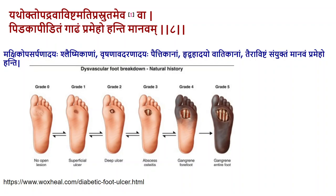In the case of Prameha, or diabetic conditions, complications such as maggot formation and fly attraction over a Kaphaja ulcer — indicating diabetic gangrene — as well as cardiac complications in Vatavyadhi and severe discharge from the wound, are signs indicating a shift to palliative care. In the present day, diabetic ulcers are classified as Grade 1 to Grade 5. Grades 4 and 5 involve gangrene, requiring removal of dead tissue, whereas up to Grade 3, conservative debridement is sufficient.